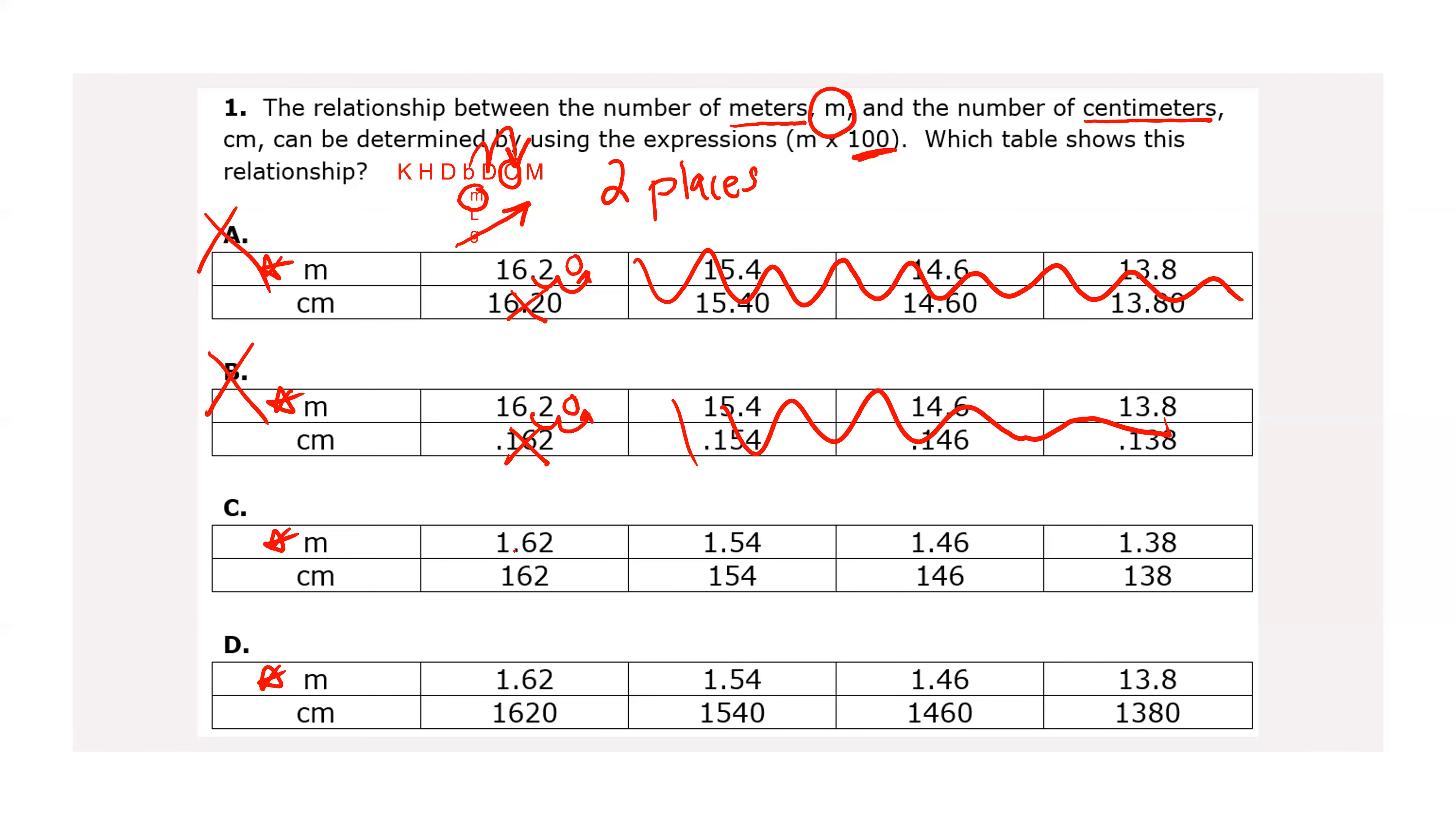C, I start at my 1.62 and I move my decimal point twice, once, twice. And I get 162, which is what is down there. Let's check the next one in this table. I move my decimal point twice, once, twice, and I get 154, which is what is listed. 1.46, I get 146. And then 1.38, once I move it, I get 138. C is looking mighty good.